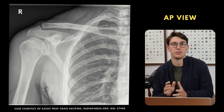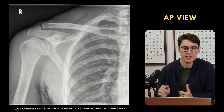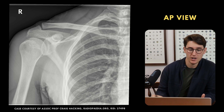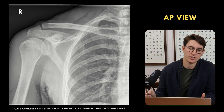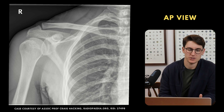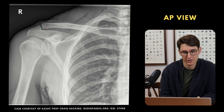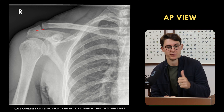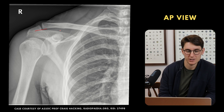When we look at an AP view on a shoulder x-ray, we need to ask ourselves five questions. The first thing we want to look at is whether the inferior border of the distal clavicle is in line with the inferior border of the acromion. In this case, it is.